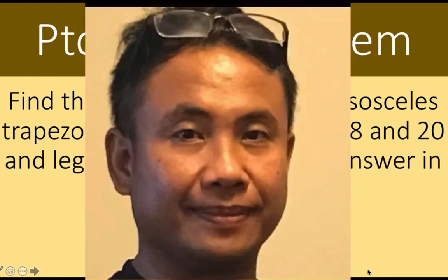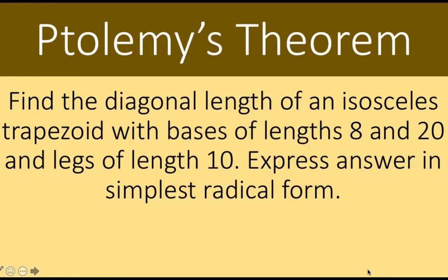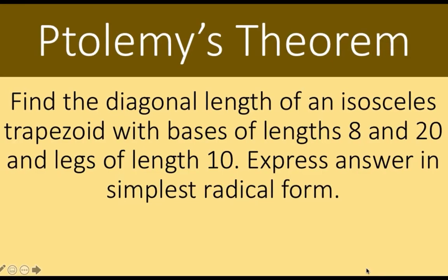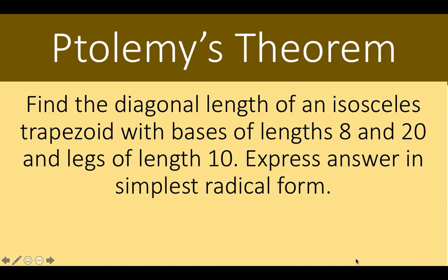Hi everyone, this is Lando Assistant. Here is our problem for today: Find the diagonal length of an isosceles trapezoid with bases of lengths 8 and 20 units and legs of length 10 units. Express your answer in simplest radical form.